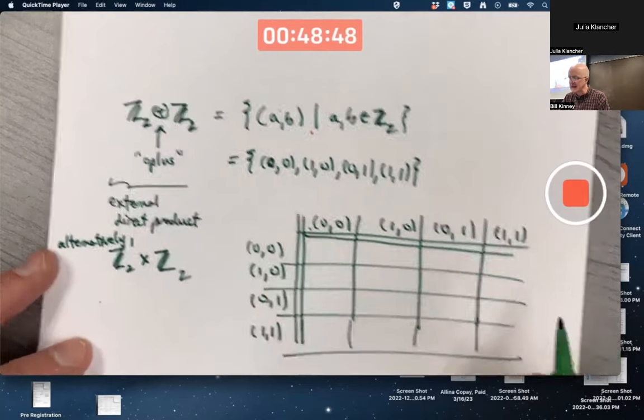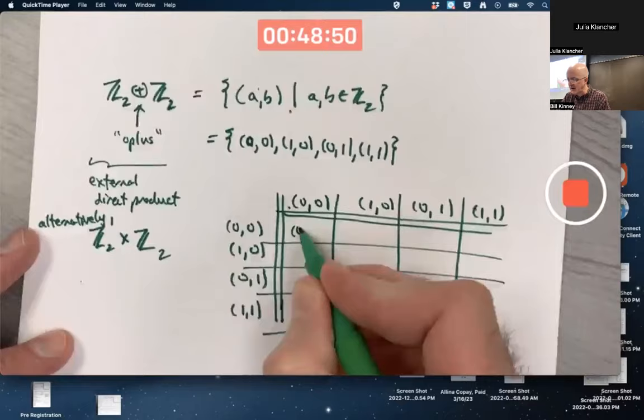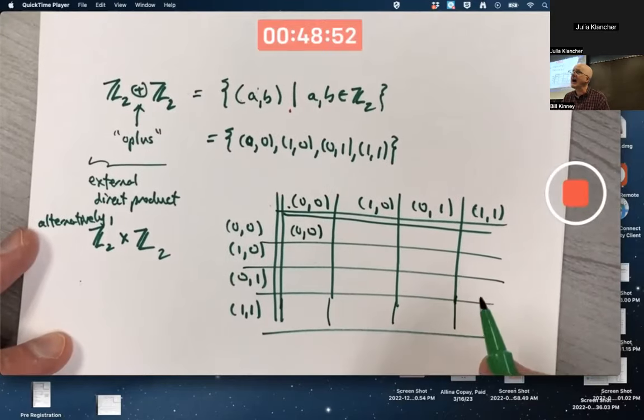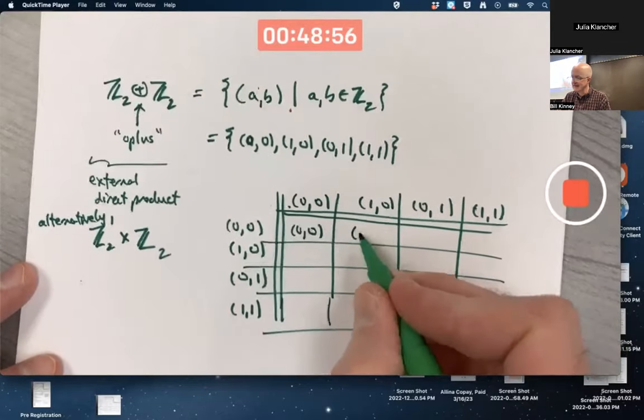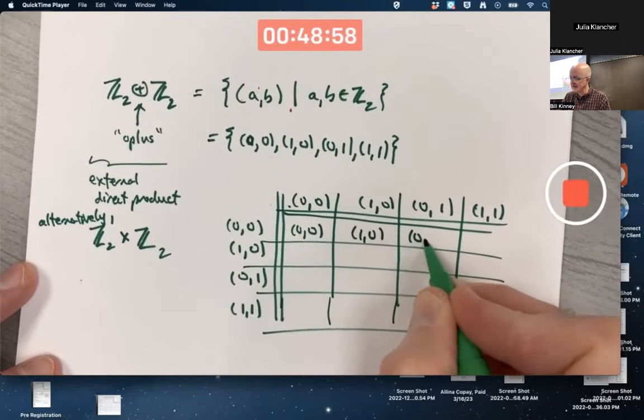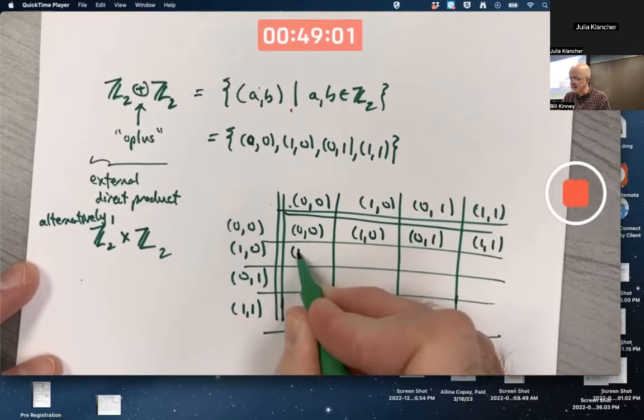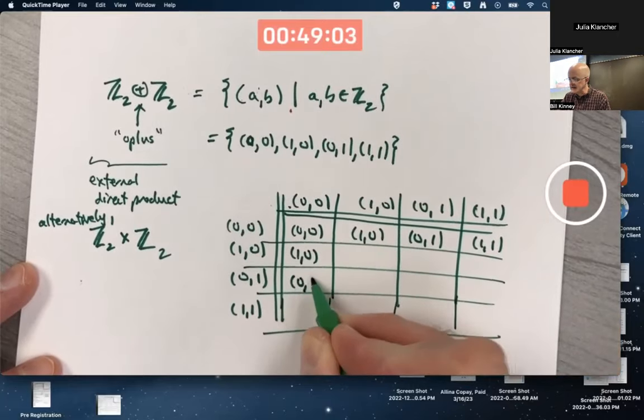So, (0,0) plus (0,0) is (0,0). In fact, (0,0) has got to be the identity. So, you're going to quickly fill in these.